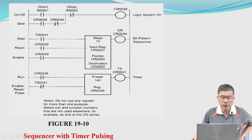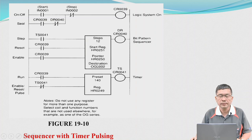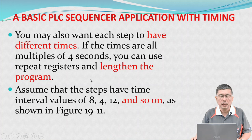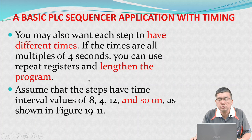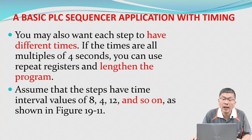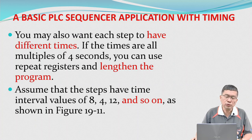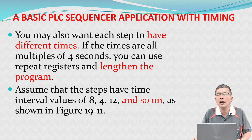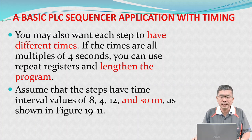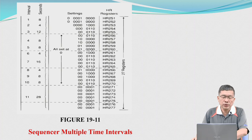This picture shows sequencer with timing. You may also want each step to have different times. If the times are all multiples of 4 seconds, you can use repeat registers and lengthen the program. Assume that the steps have time interval values of 8, 4, 12, and so on, as shown in figure 19.11. This picture shows the sequencer multiple time intervals.